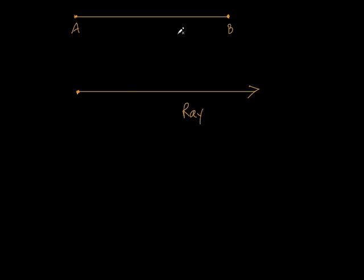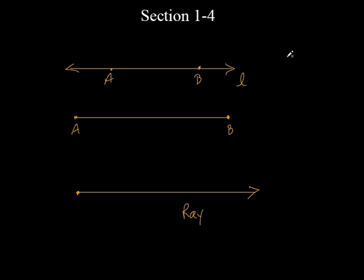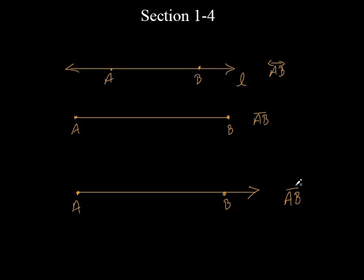Let's label it. Remember how to label a line and a line segment? A line would be line AB, like this. This would be line segment AB, like that. And if I put an A here and a B right there — this is how we label a ray. We put A, B. But look, it only goes in one direction. So we put a little arrow going like that. That's how we label a ray. Now, does the A on this line have to be at the left-hand side? No. We always put the arrow going to the right no matter which direction the ray is going.